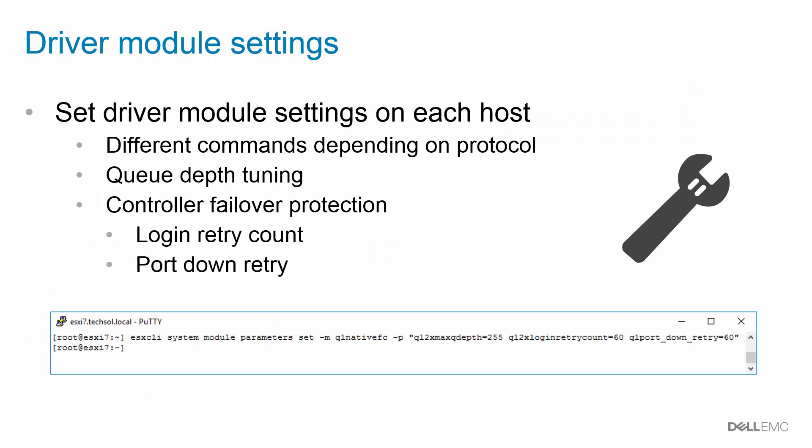One of the first and most important settings you can set on your vSphere cluster is to set the driver module settings in each host. Now depending upon the protocol, whether it be iSCSI or Fiber Channel, these commands are different, but they accomplish essentially the same things. The first thing is Q-Depth tuning. By opening the Q-Depth wide open, this allows the applications running within the virtual machines to control the performance going to the SAN.